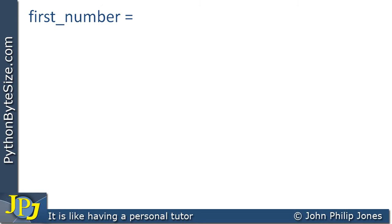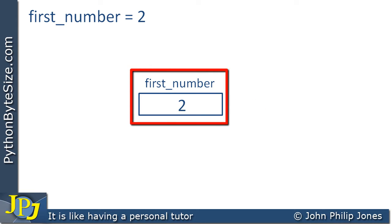Consider the following program statement. First number is assigned 2. And what we can see, I've got a model here where I have a rectangular area representing the variable and we can see 2 has been placed in that particular variable.